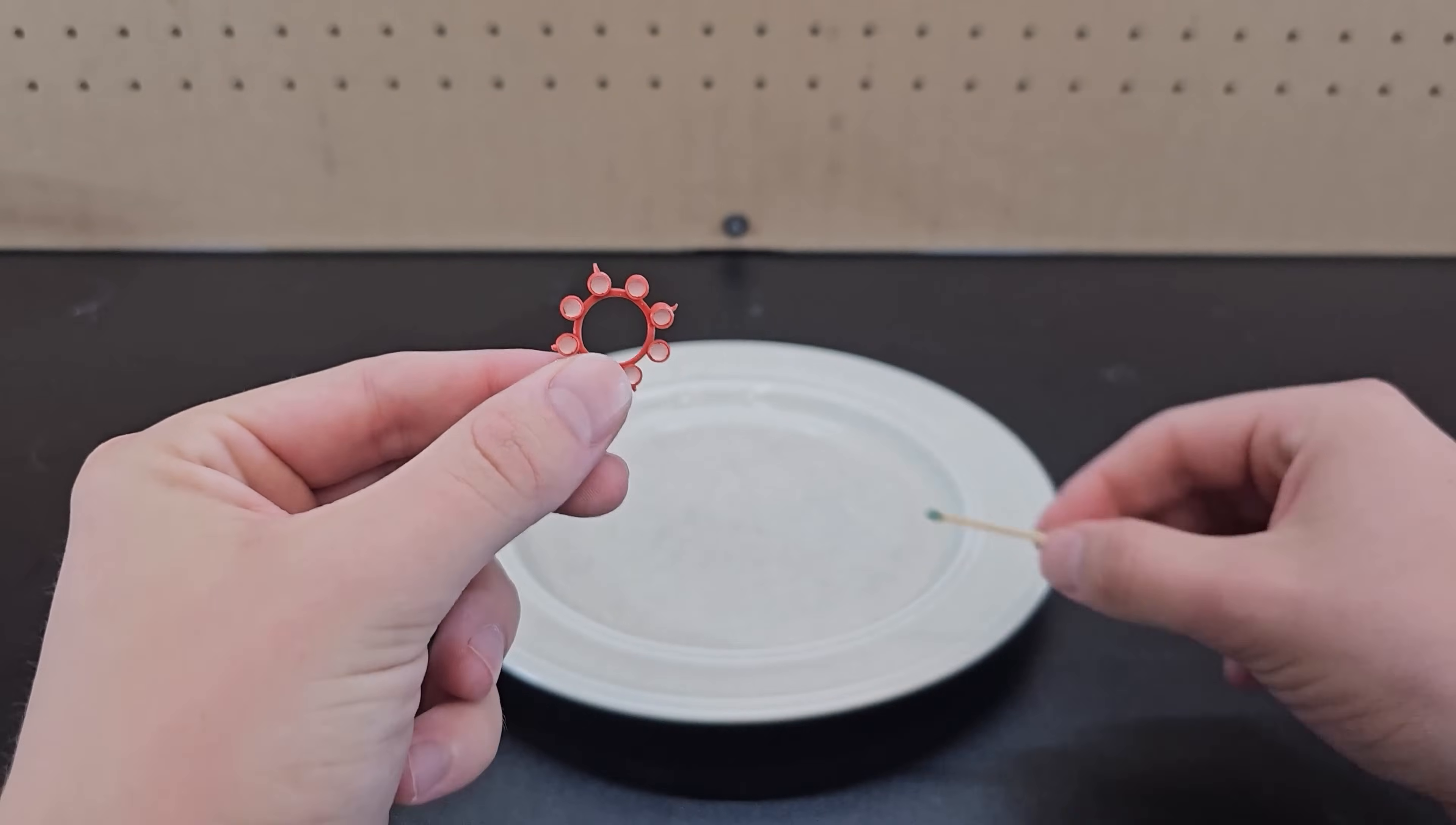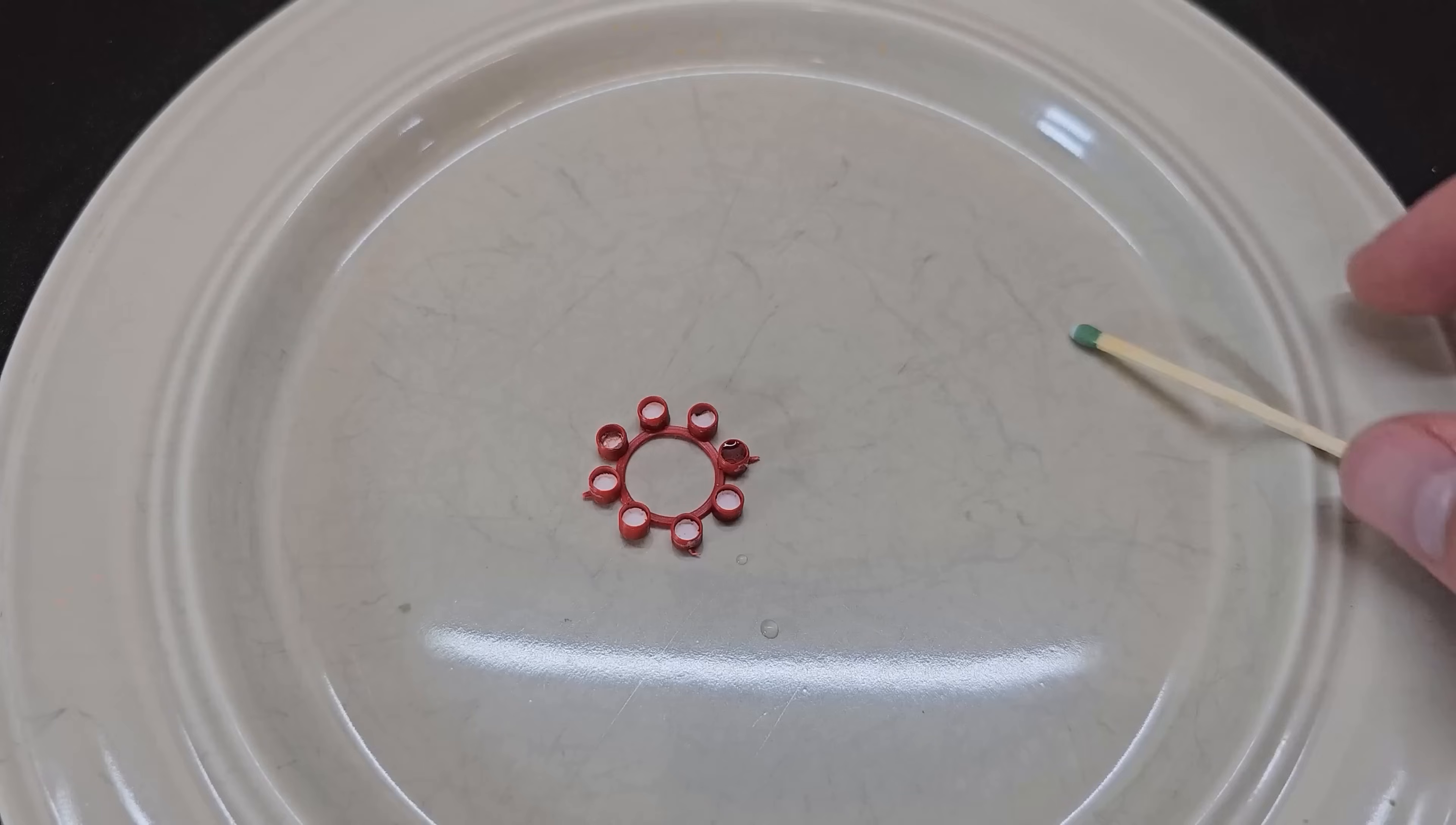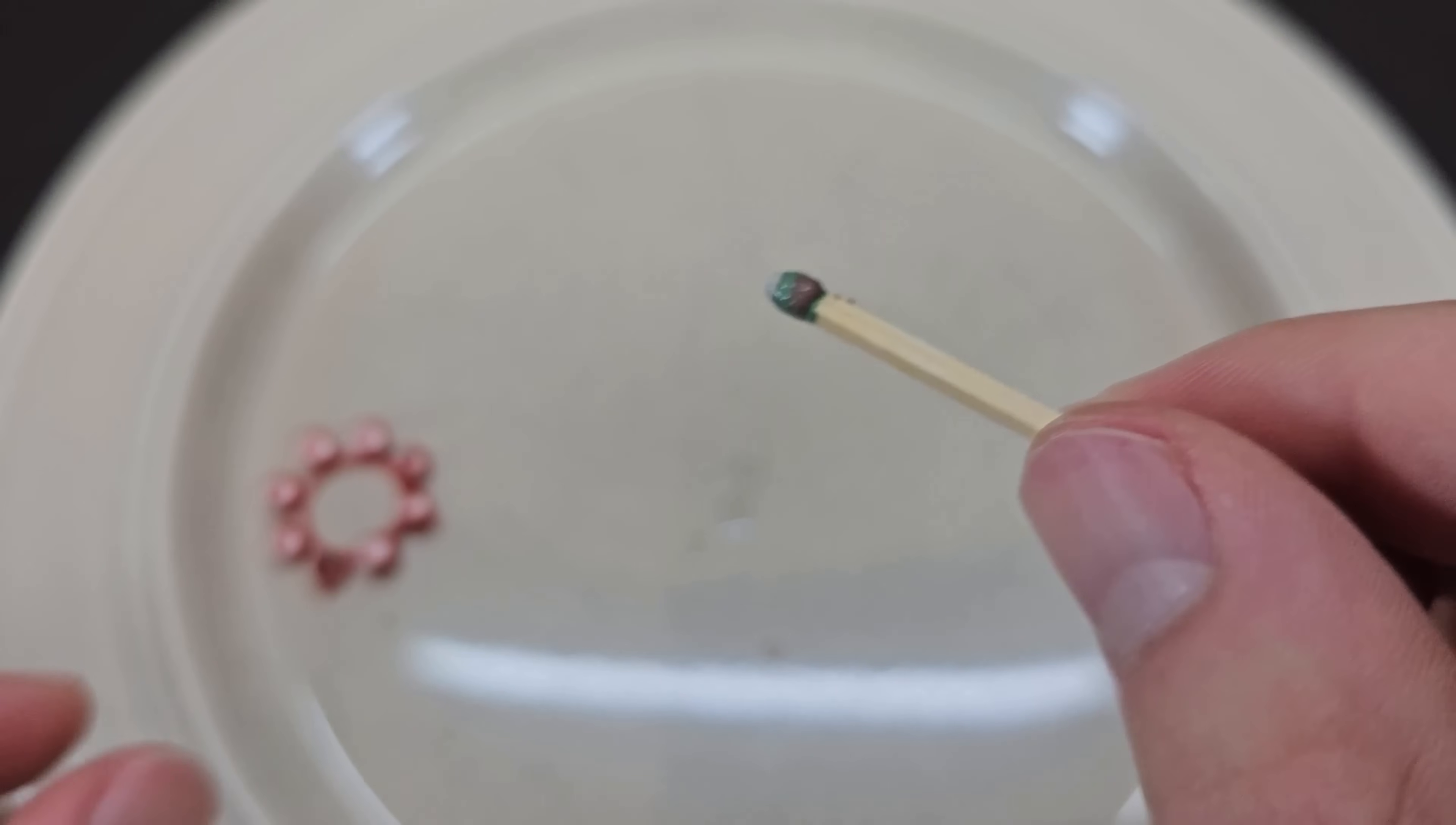First grab some toy cap gun ammo like this and a match. Carefully remove the paper layer on one of the ammo chambers and place a drop of water inside. Then take the match and carefully but thoroughly dip and spin the match in it. Do so until you see a thin coating on the match.